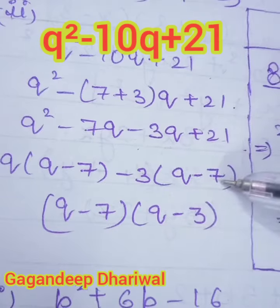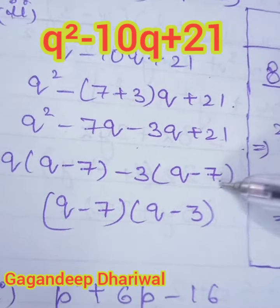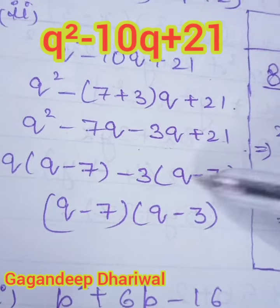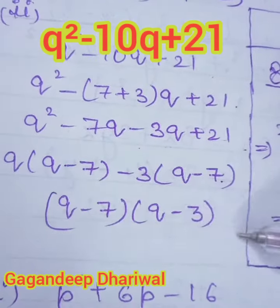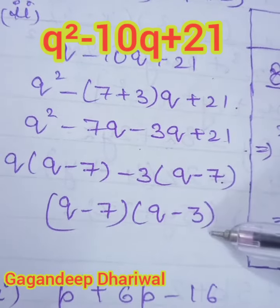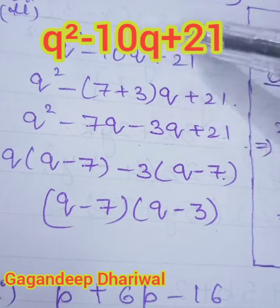Now take q minus 7 again as common, then the remaining is q minus 3. So q minus 7 and q minus 3 is the factor of q square minus 10q plus 21.